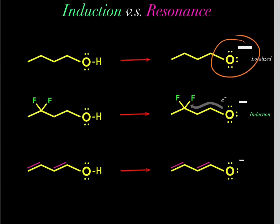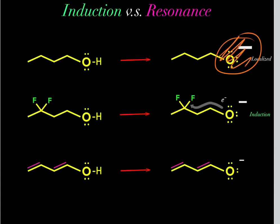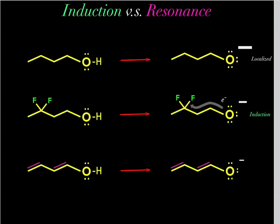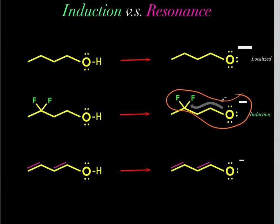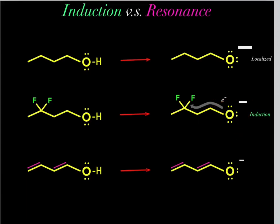So we have that same charge of one negatively charged electron spread out over a larger volume, resulting in lower charge density — which is stable. That's why this oxygen is more stable than the first one. The first oxygen has its negative charge localized, giving it high charge density and making it unstable. Due to induction, the second oxygen's negative one charge is spread over a larger volume, creating smaller charge density and more stability.